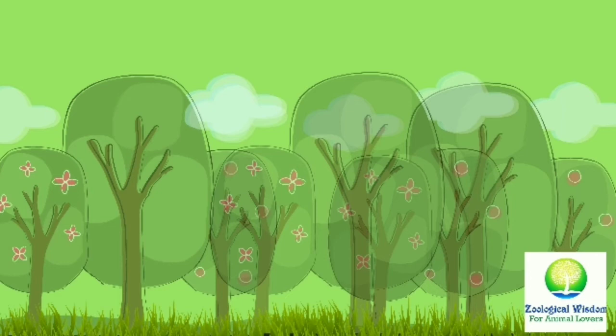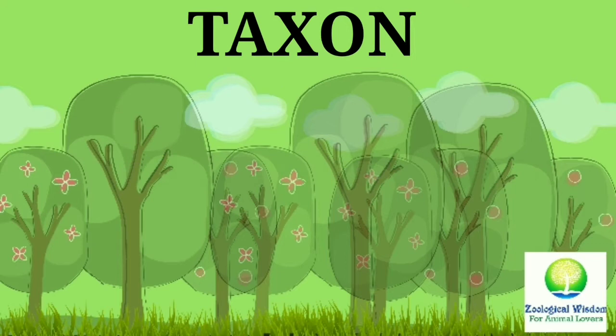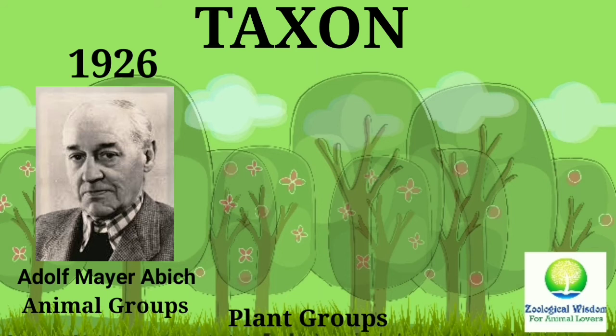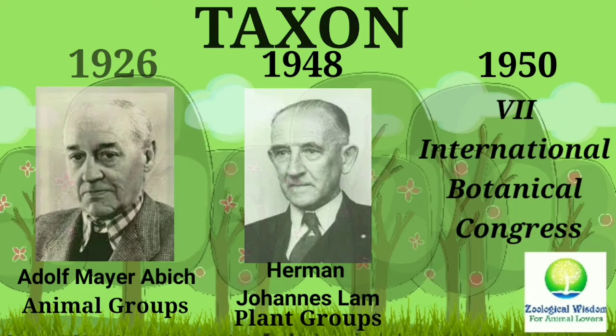A Taxon is any unit of classification. The term taxon was used in 1926 by Adolf Meyer-Abich for animal groups. For plants, it was proposed by Hermann Johans Lam in 1948 and was adopted at the 7th International Botanical Congress held in 1950.